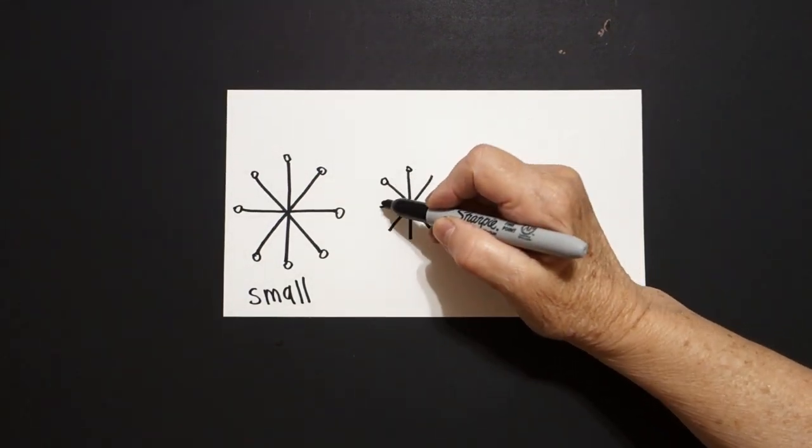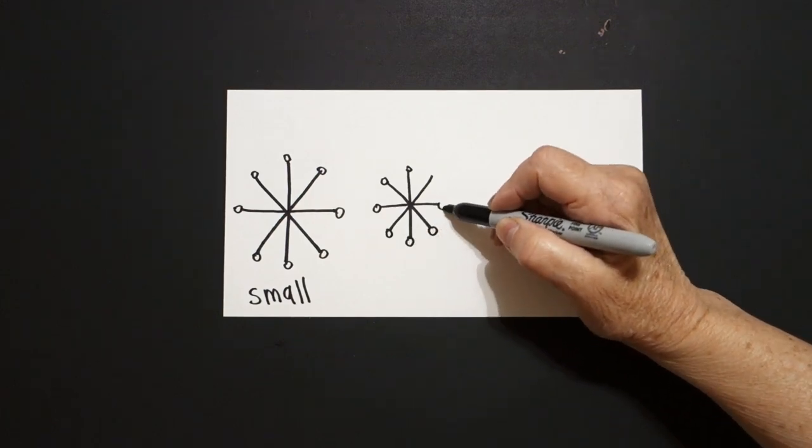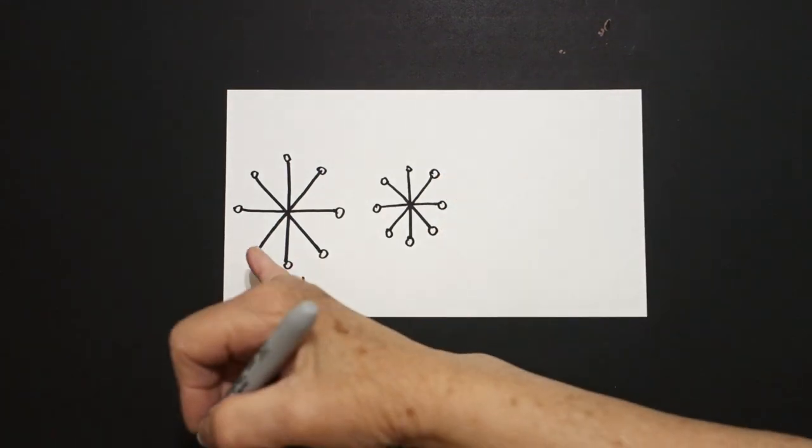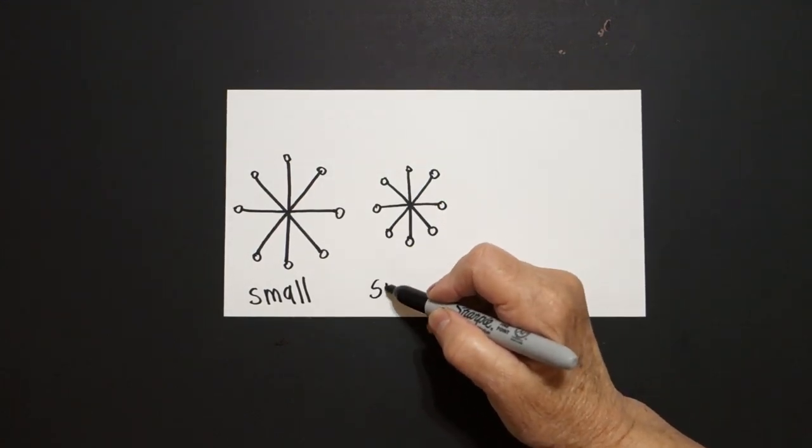Baby circle, baby circle, baby circle all the way around. Now, this is a small snowflake, but this one is even smaller.